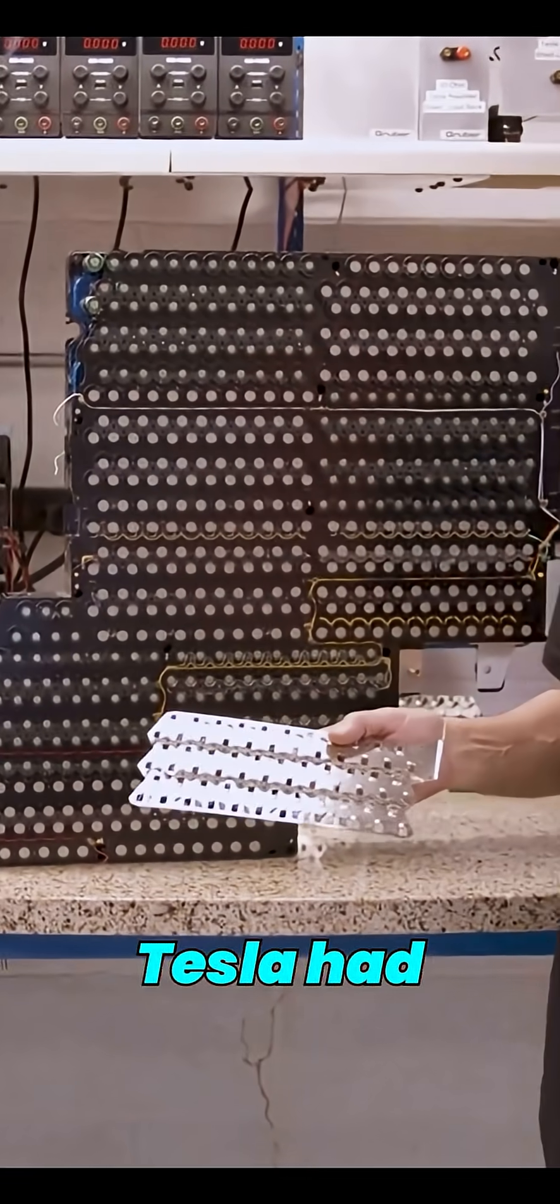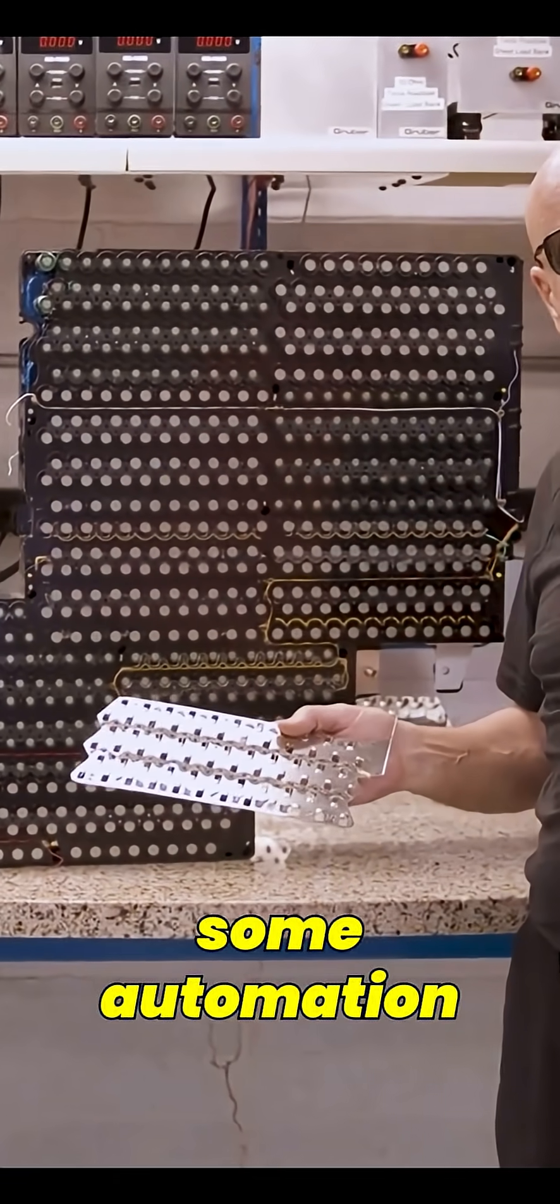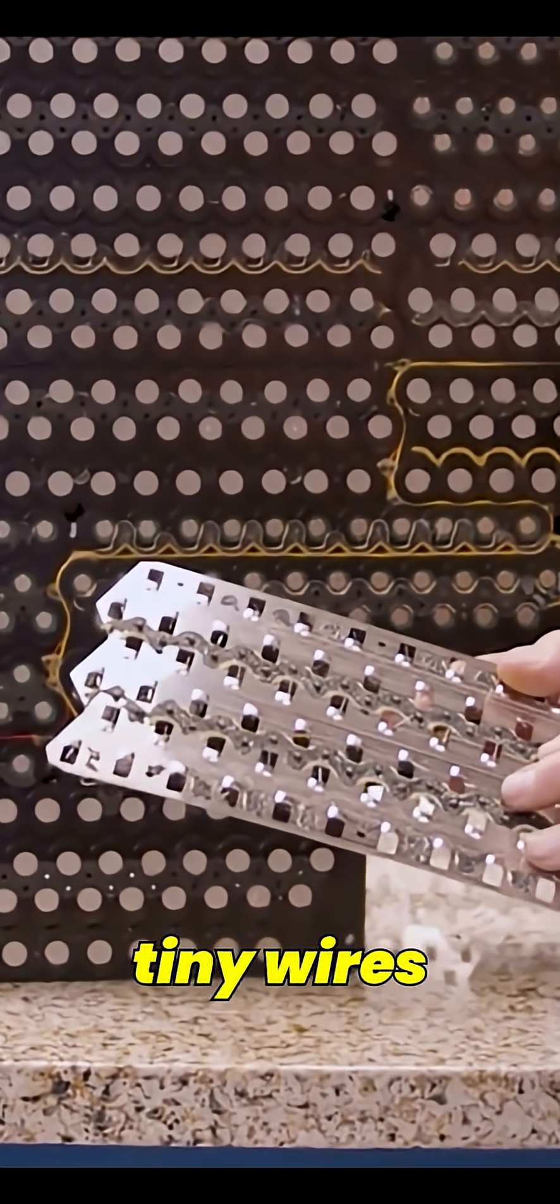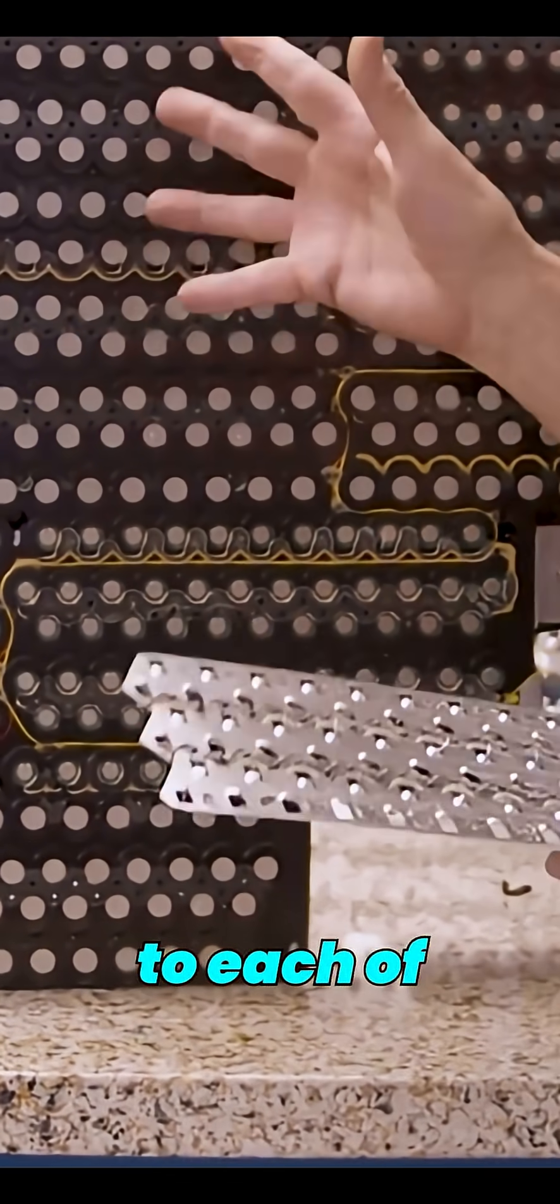In the day, Tesla had wire bonders and some automation robotics that connected all of these tiny wires in sections to each of the cells.